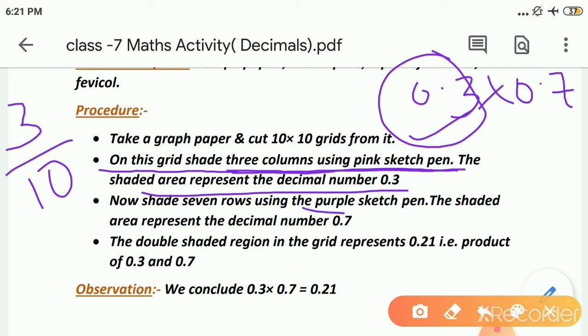Then with another sketch pen I use for that purple 0.7. It means I have to shade 7 rows using purple sketch pen. So the shaded area shows the 0.7. So what happened children? Whatever double shaded region you will get, that will represent 0.21. And if you will see the multiplication of 0.3 and 0.7, it is only 0.21. So let's do with me. With the shading how can we get the 0.21 shaded region. So we conclude that 0.3 into 0.7 equals to 0.21.